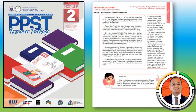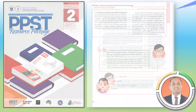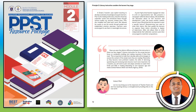Now, we also have to remember that the teaching of literacy skills at any key stage is important. Let us take note of how these skills are developed in each key stage as we explore more examples of teacher practices. We are now on Principle 2: Literacy instruction considers the learner's key stage — meaning literacy instruction must be appropriate to the key stage of the student.